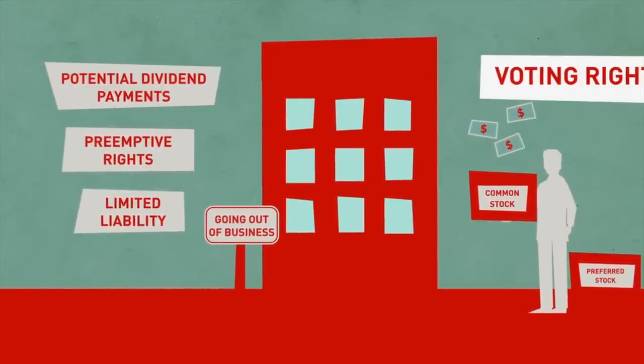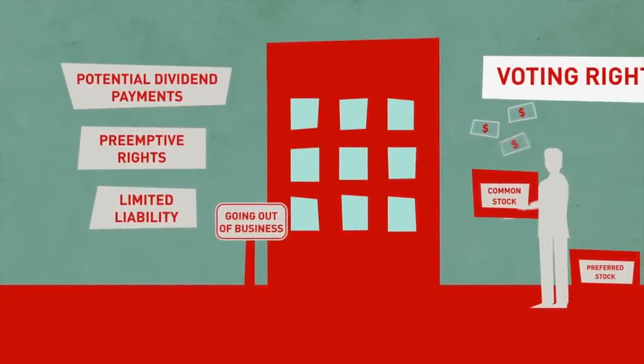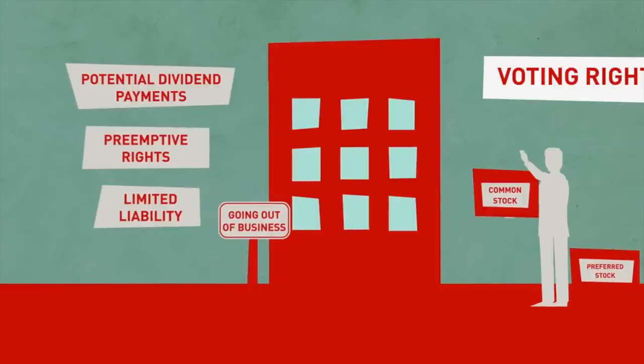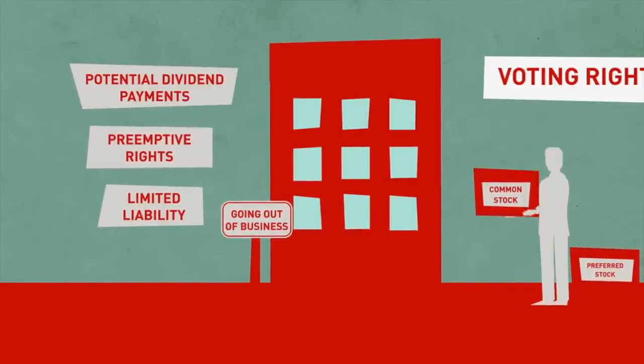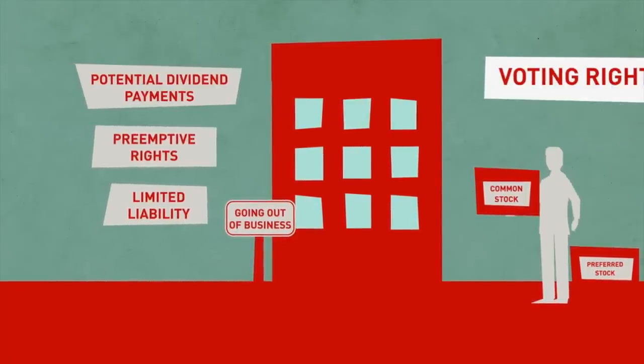You are also entitled to a portion of the assets of the corporation should it be liquidated. However, in the event that a company is liquidated, holders of common stock are the last to be compensated. This lower level of priority can make common stocks riskier than preferred stocks or bonds.